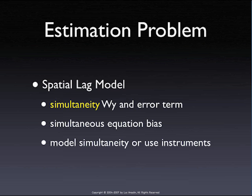We can use instruments — that's the methods of moments approach, or instrumental variables approach. Or we can specify a complete model for the simultaneity, which is the maximum likelihood approach. So we set up a model with a distribution and a specification that includes the spatial lag in the model, and then we derive the estimates from that.